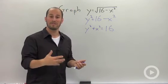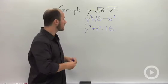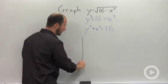This is an equation for a circle centered at the origin, radius 4. So what I want to do is graph that circle.